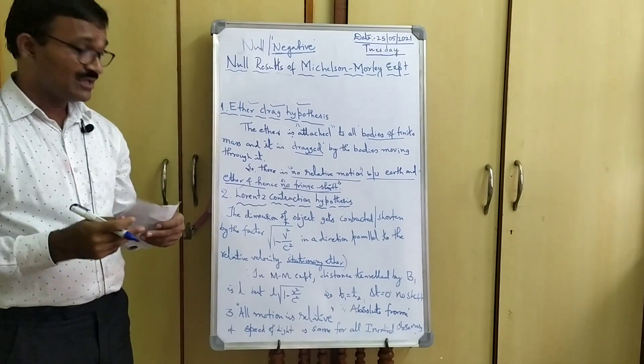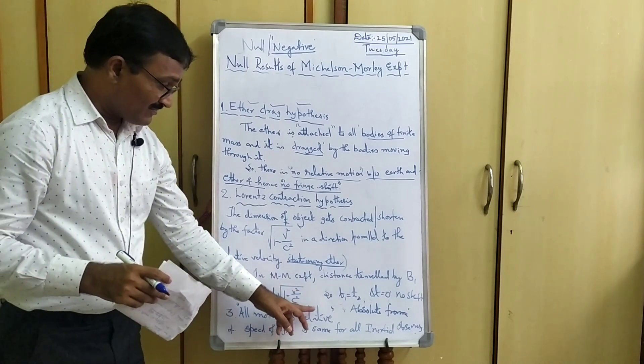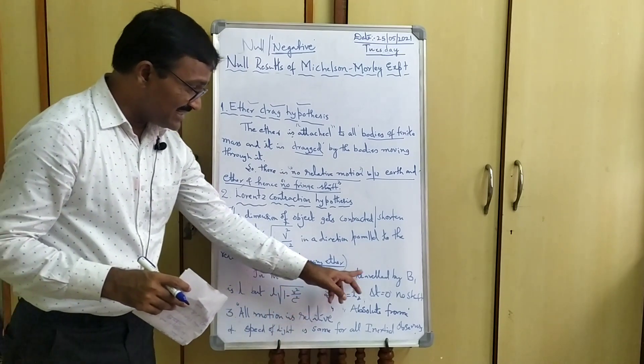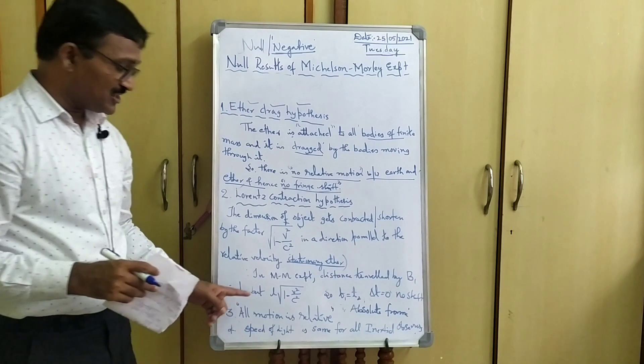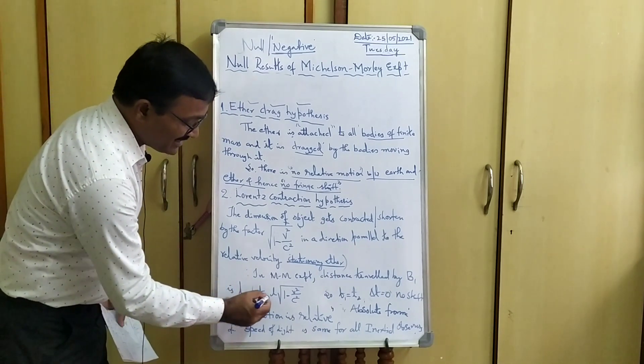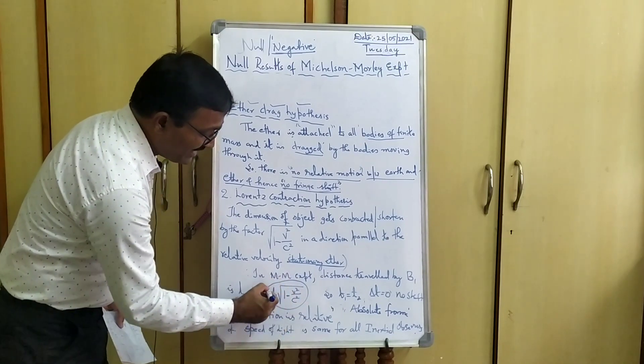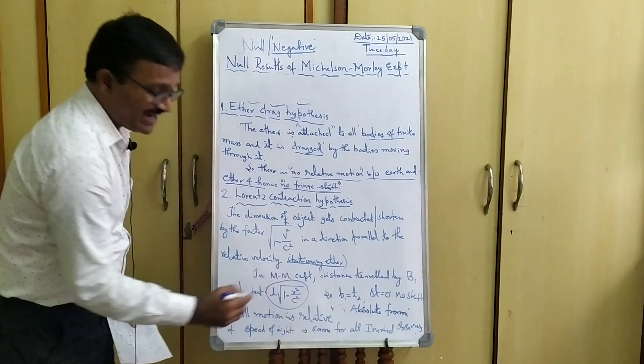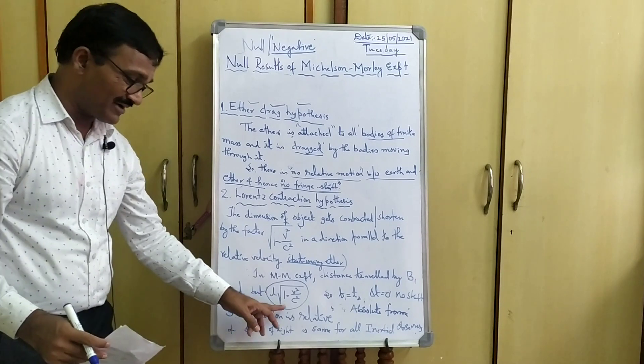So in the Michelson-Morley experiment, the distance travelled by beam 1 is not L. This is not an optical path length L. But it is a product of L into this Lorentz factor, Lorentz dimension contraction factor.